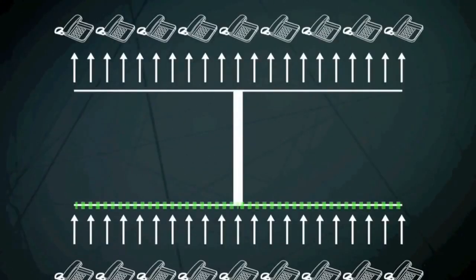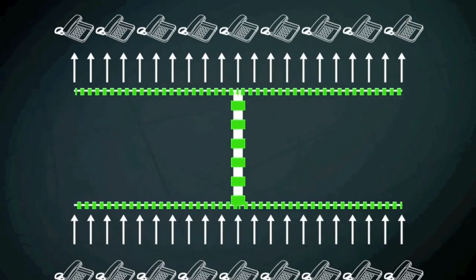A process called multiplexing allows thousands of conversations to be transmitted at the same time along one cable.